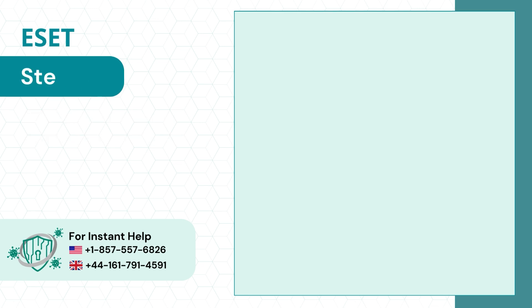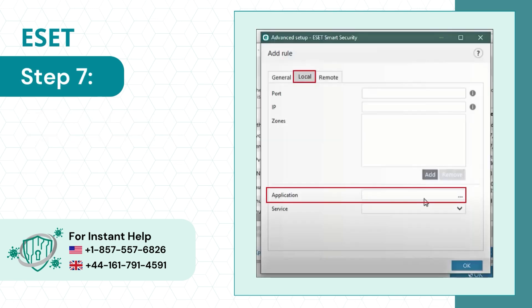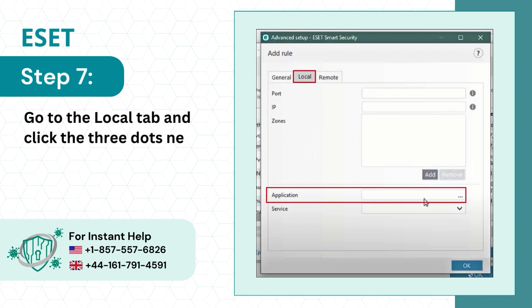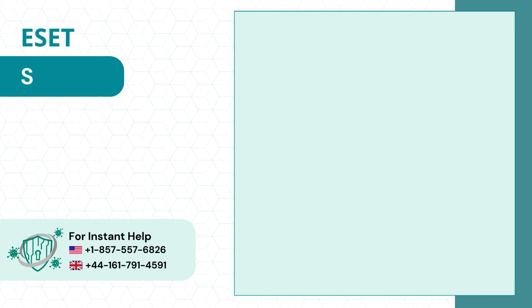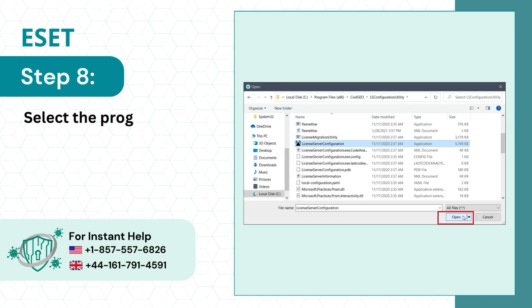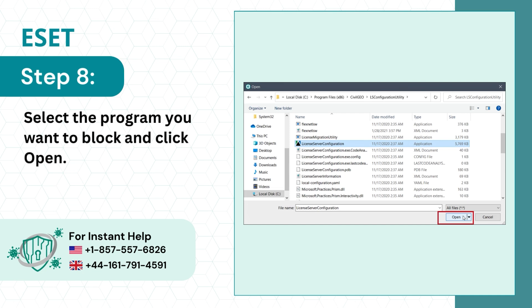Step 7: Go to the Local tab and click the three dots next to Applications. Step 8: Select the program you want to block and click Open.